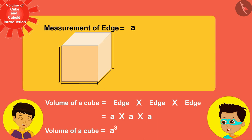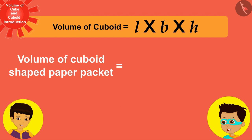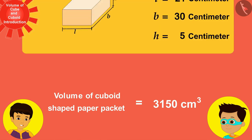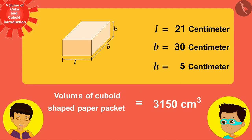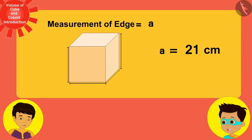You understood this very quickly, Manas! Now let's first measure the length, breadth, and height of this cuboid paper packet and replace the values in the formula. Its length is 21 centimeters, breadth is 30 centimeters, and height is 5 centimeters. On solving, the volume of this cuboid shaped paper packet is 3150 cubic centimeters.